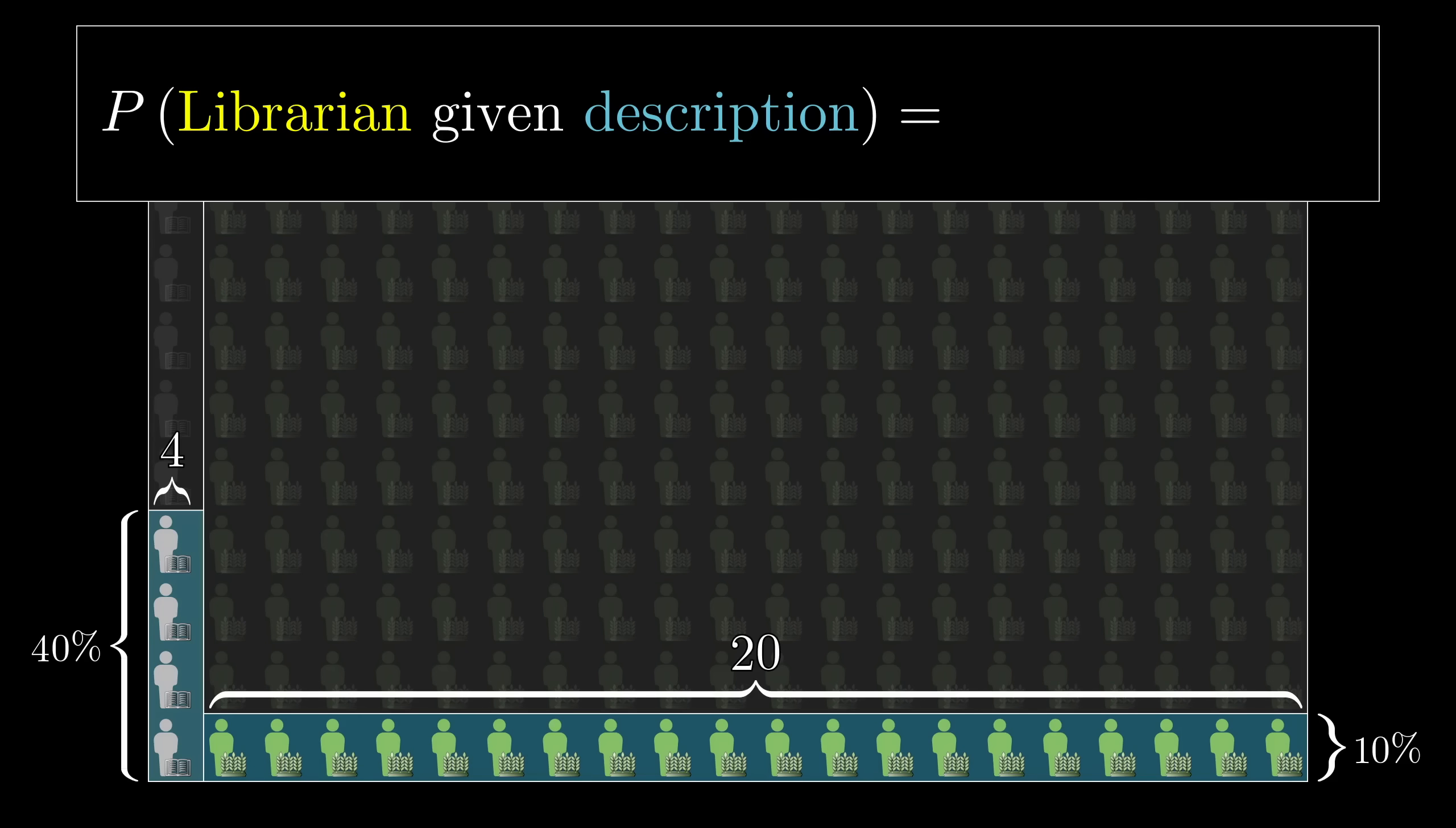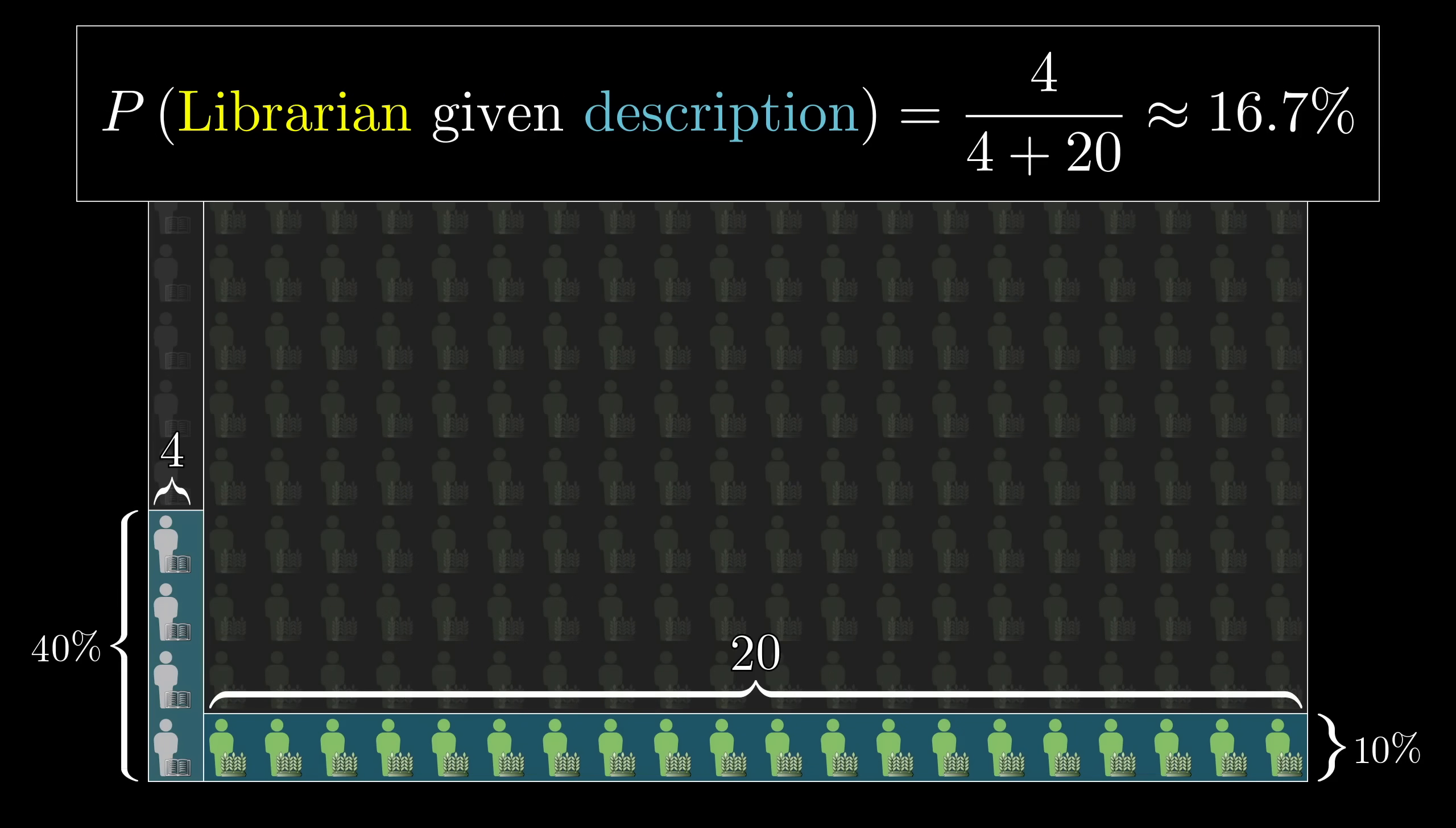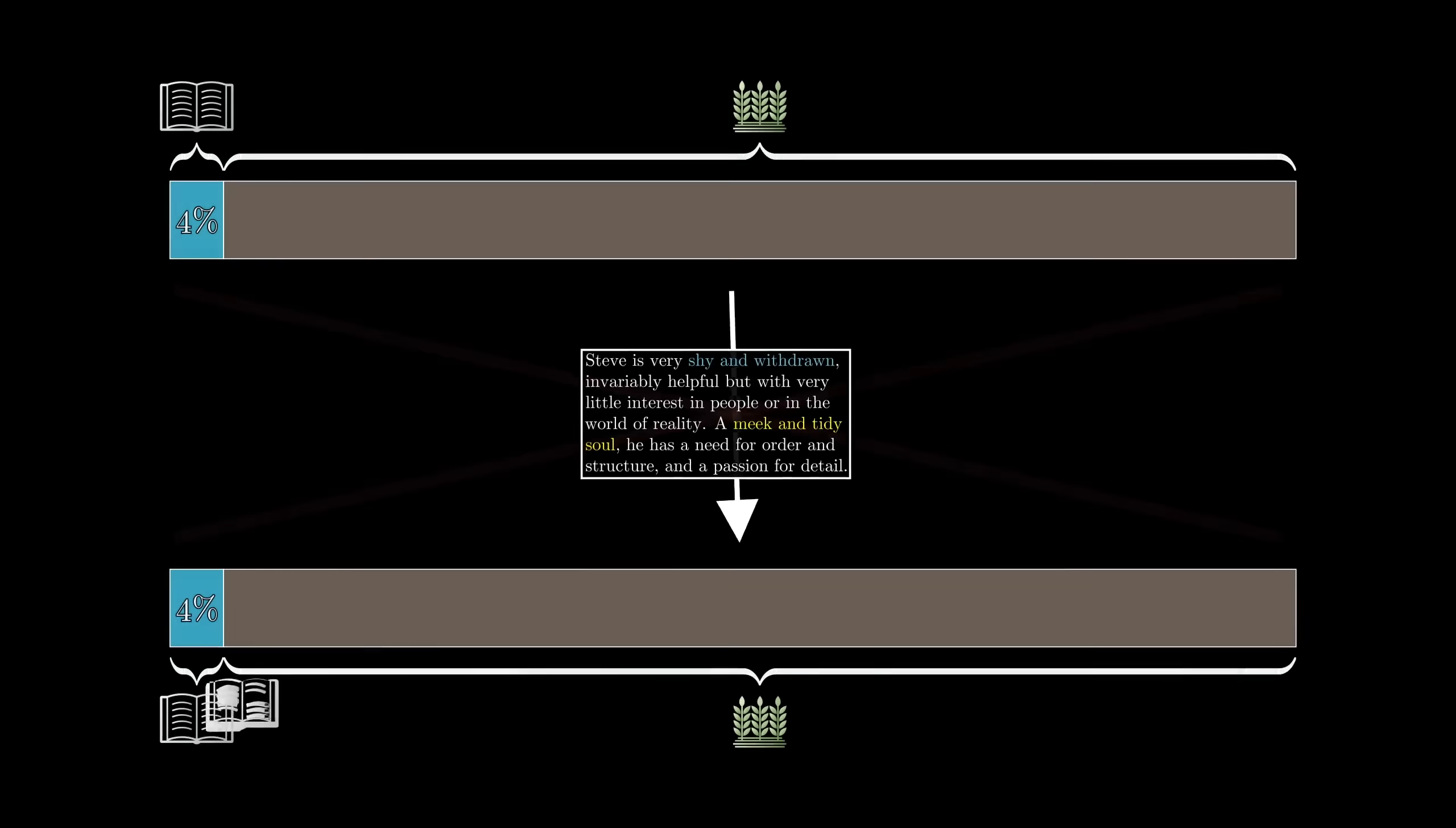So the probability that a random person among those who fit this description is a librarian is 4 out of 24, or 16.7%. So even if you think that a librarian is 4 times as likely as a farmer to fit this description, that's not enough to overcome the fact that there are way more farmers. The upshot, and this is the key mantra underlying Bayes' theorem, is that new evidence does not completely determine your beliefs in a vacuum. It should update prior beliefs.